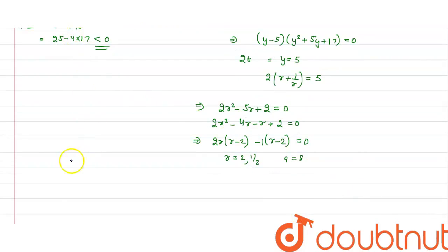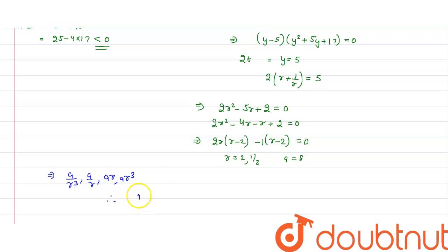We have our 4 numbers as ar³, ar, a/r, and a/r³. Putting the values of r and a = 8, we get two GPs: GP1 is 1, 4, 16, 64 and GP2 is 64, 16, 4, 1. These are the four numbers in GP. Thank you.